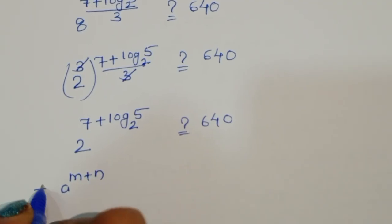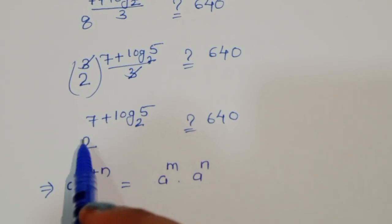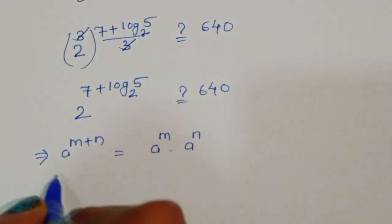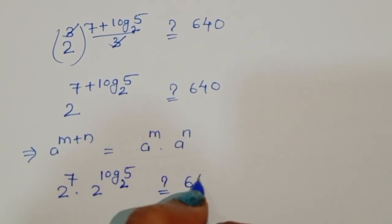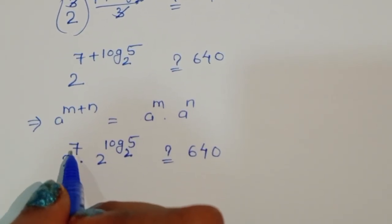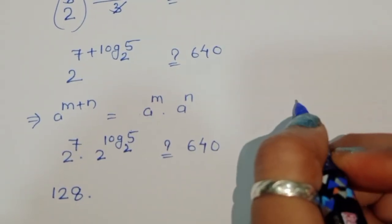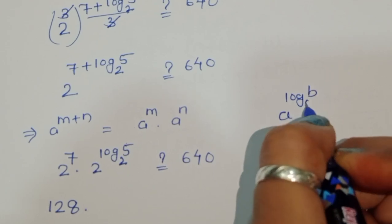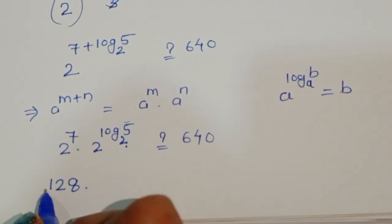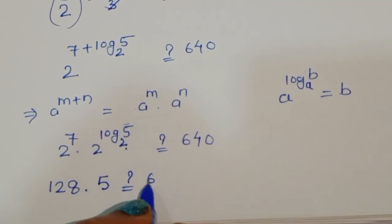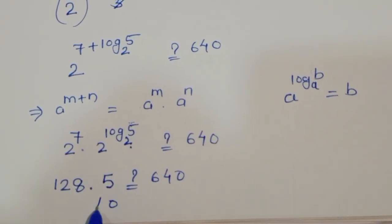Using the formula a^(m+n) = a^m times a^n, this becomes 2 power 7 times 2 power (log₂ 5). Now 2 power 7 equals 128. For 2 power log₂ 5, we use the formula a^(log_a b) = b, so 2 power log₂ 5 equals 5. Therefore we have 128 times 5.